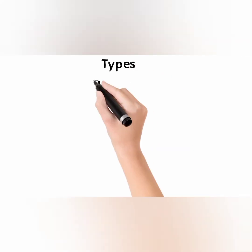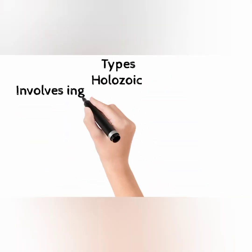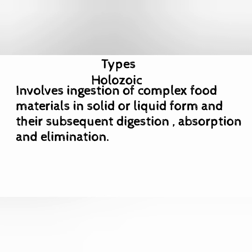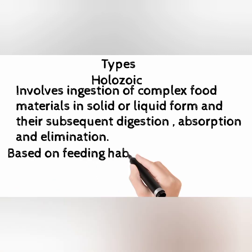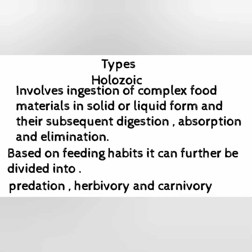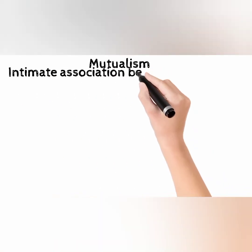Holozoic nutrition involves ingestion of complex food materials in solid or liquid form and their subsequent digestion, absorption, and elimination. Based on feeding habits, it can be further divided into predation, herbivory, and carnivory.